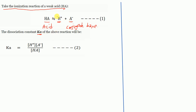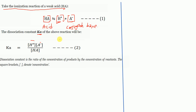Ka equals the concentration of the products divided by the concentration of the reactant: Ka = [H⁺][A⁻] / [HA]. The square brackets denote concentration. This is the equilibrium expression for the dissociation constant.